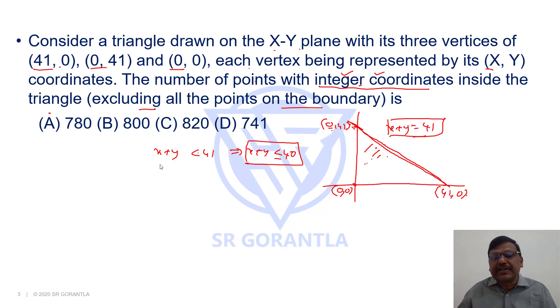Now, what are the possibilities? But at the same time, we want all the points inside the triangle excluding the points on the boundary. You can't take the points on the boundary.